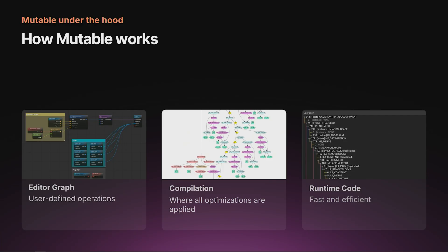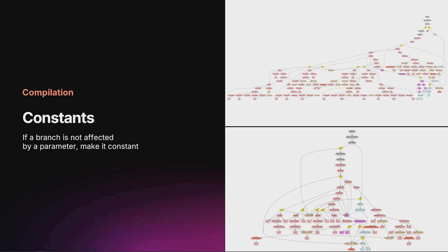The final optimized graph, textures, and meshes get transformed into runtime virtual machine code, which is fast and efficient to execute during gameplay. During compilation is where all the magic happens — hence why Mutable can do so much at runtime.